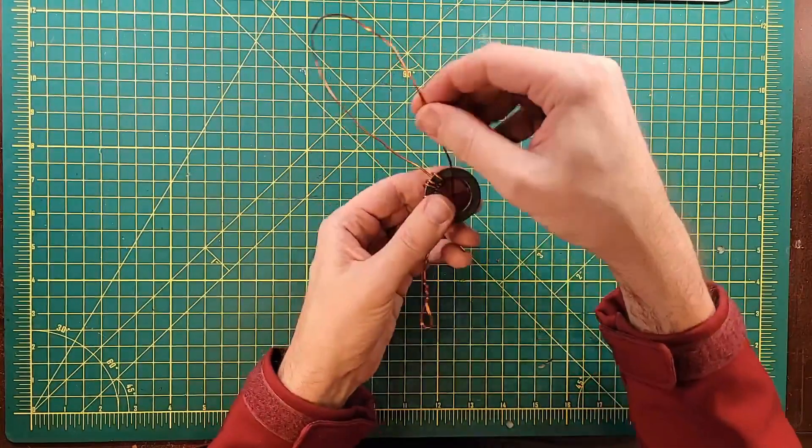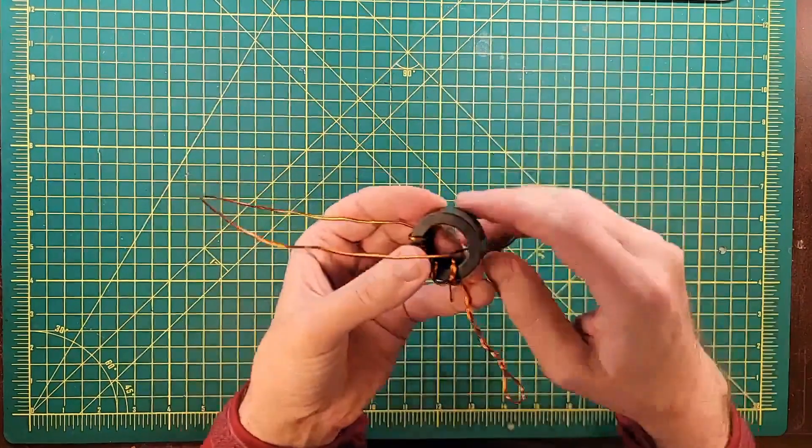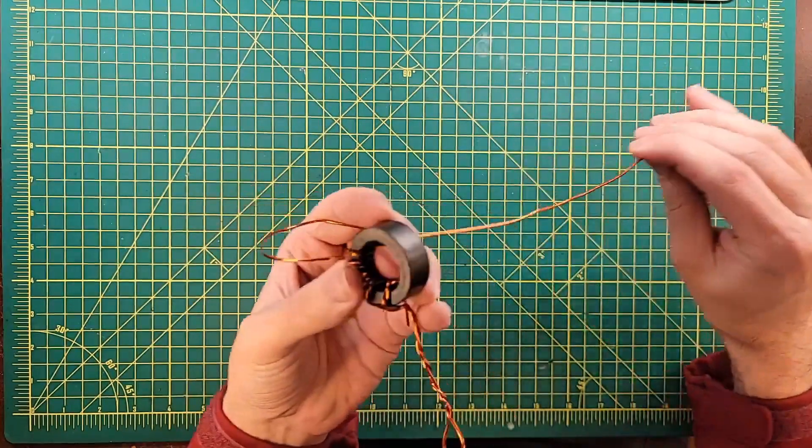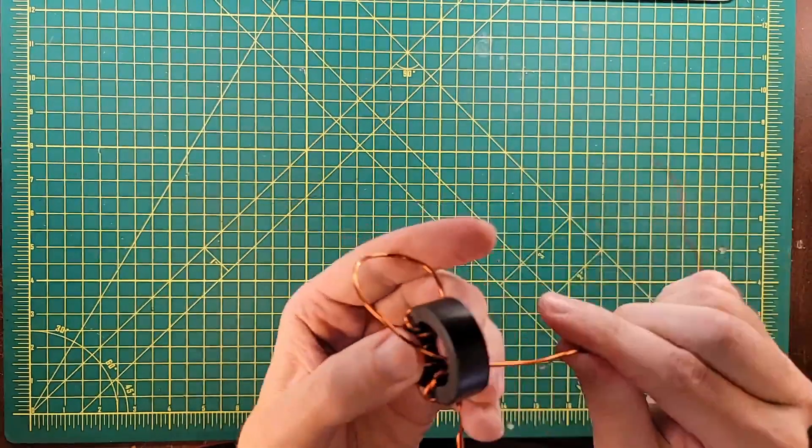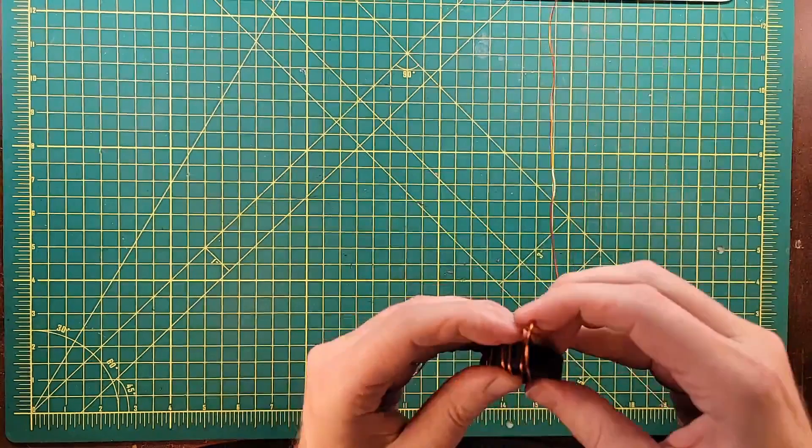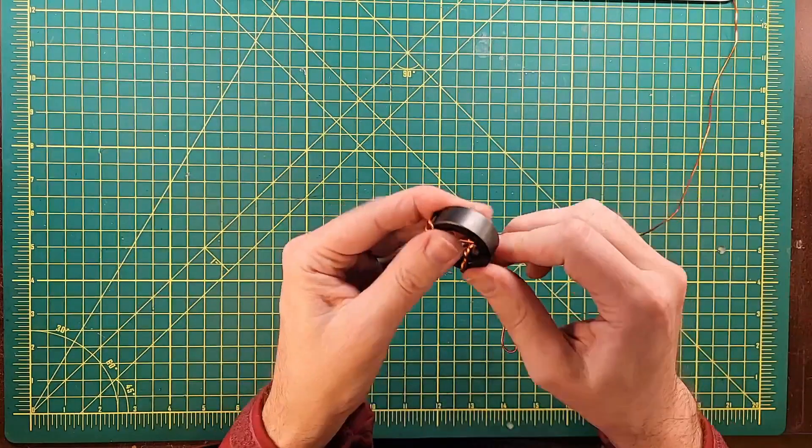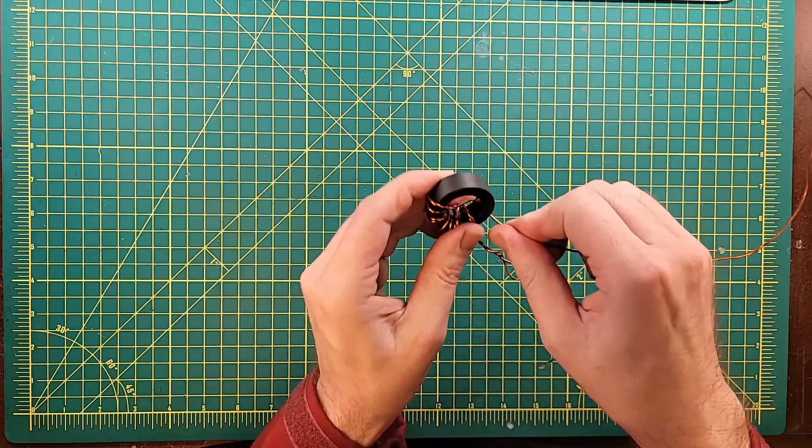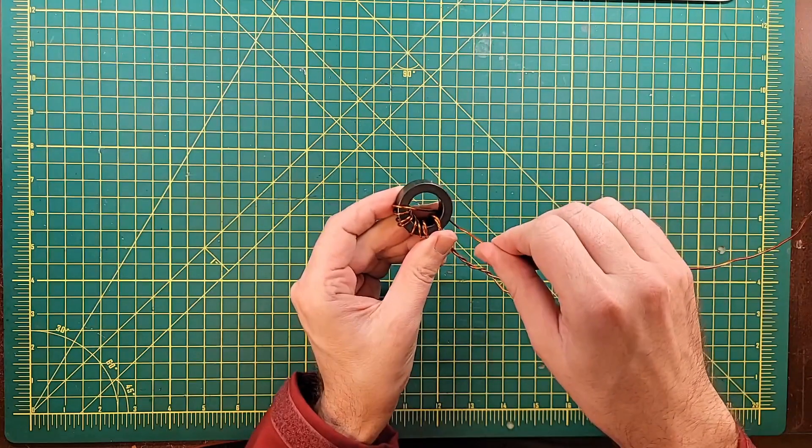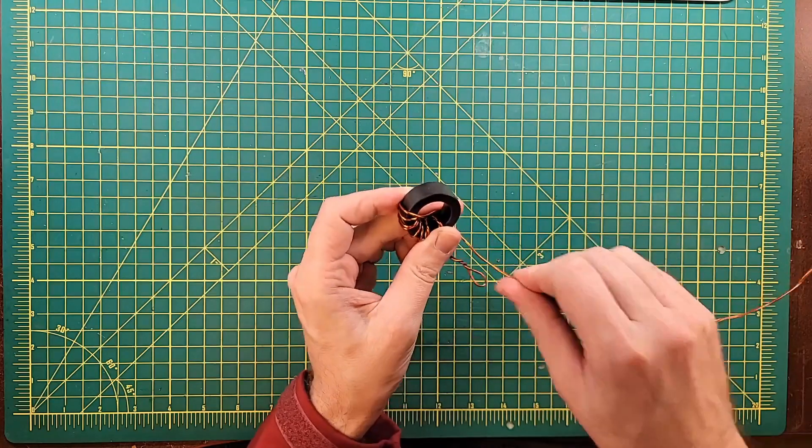And this is where it gets to be interesting. We're going to do what we call a crossover. We're going to put turn eight in to the toroid. And instead of coming out on the same side, we're going to come out on the opposite side. It's still considered a wrap, but instead of going in and back around the same side, it crosses over just like that. So that's turn eight.